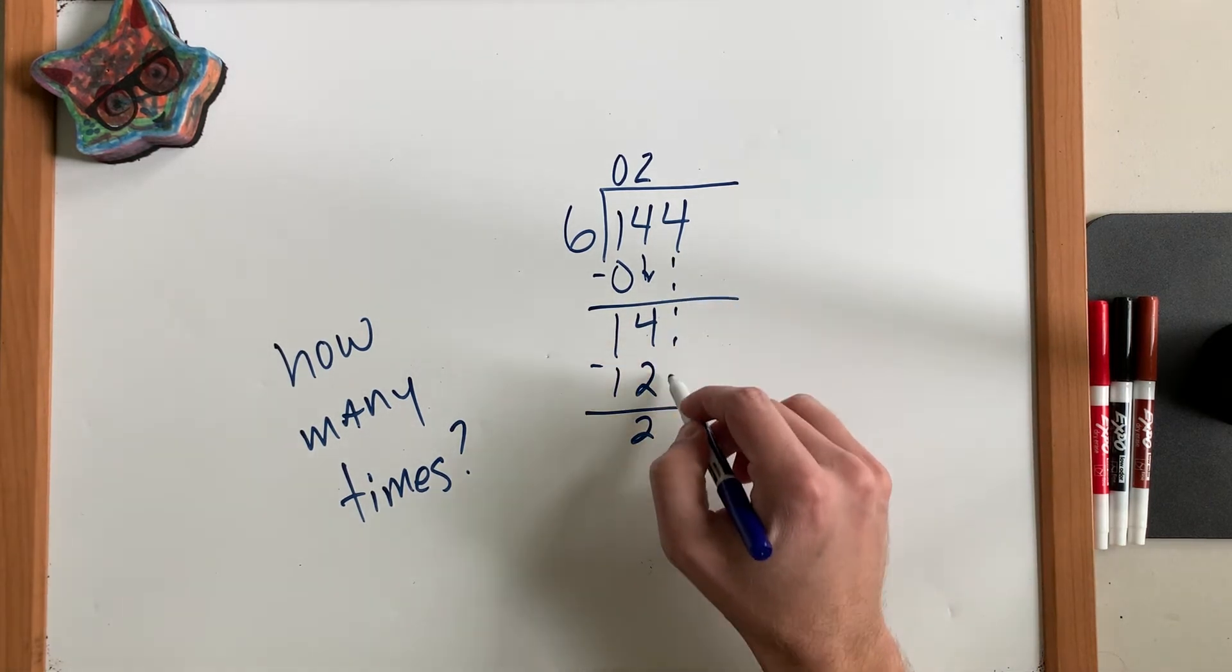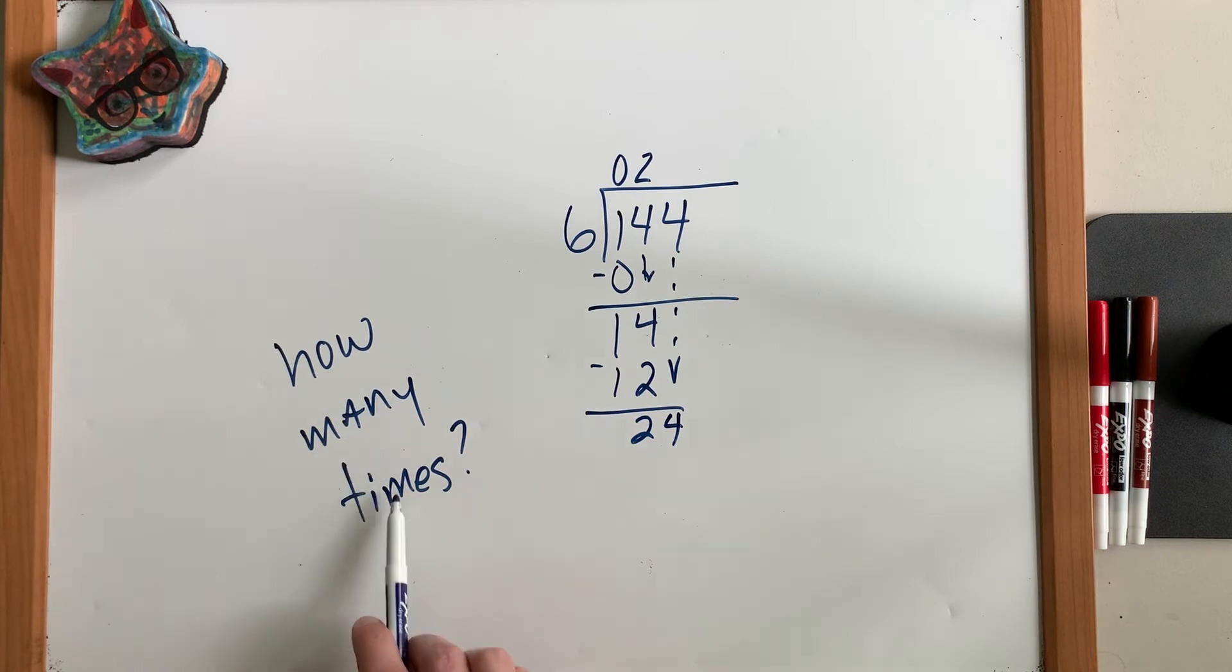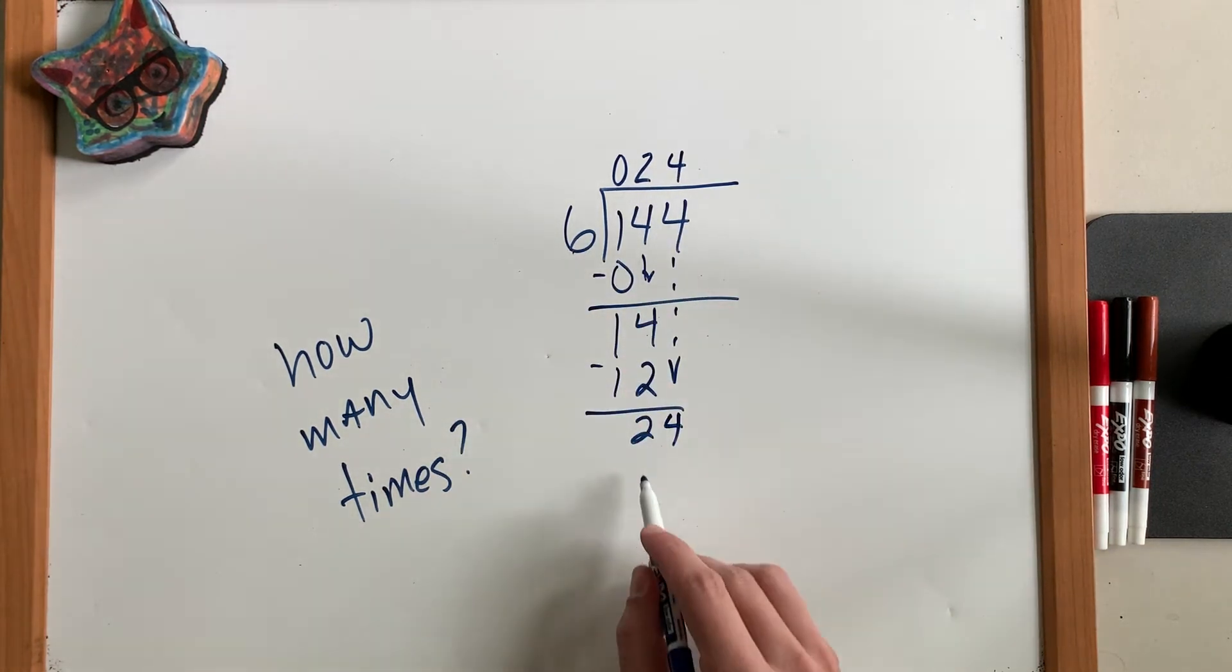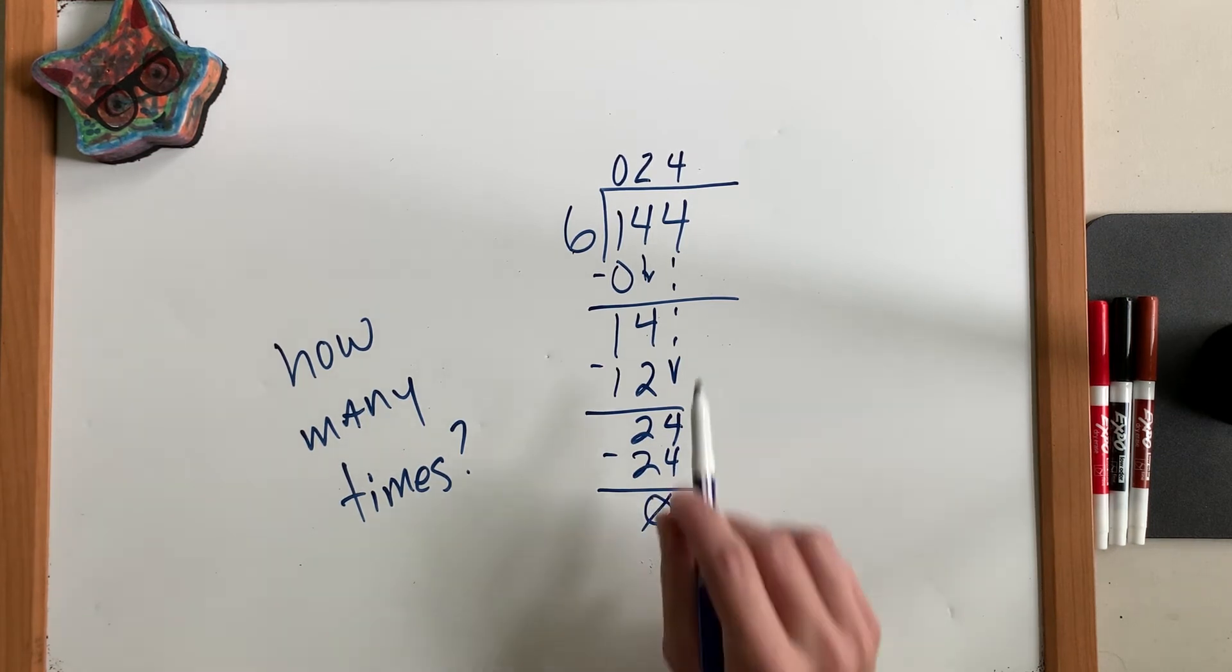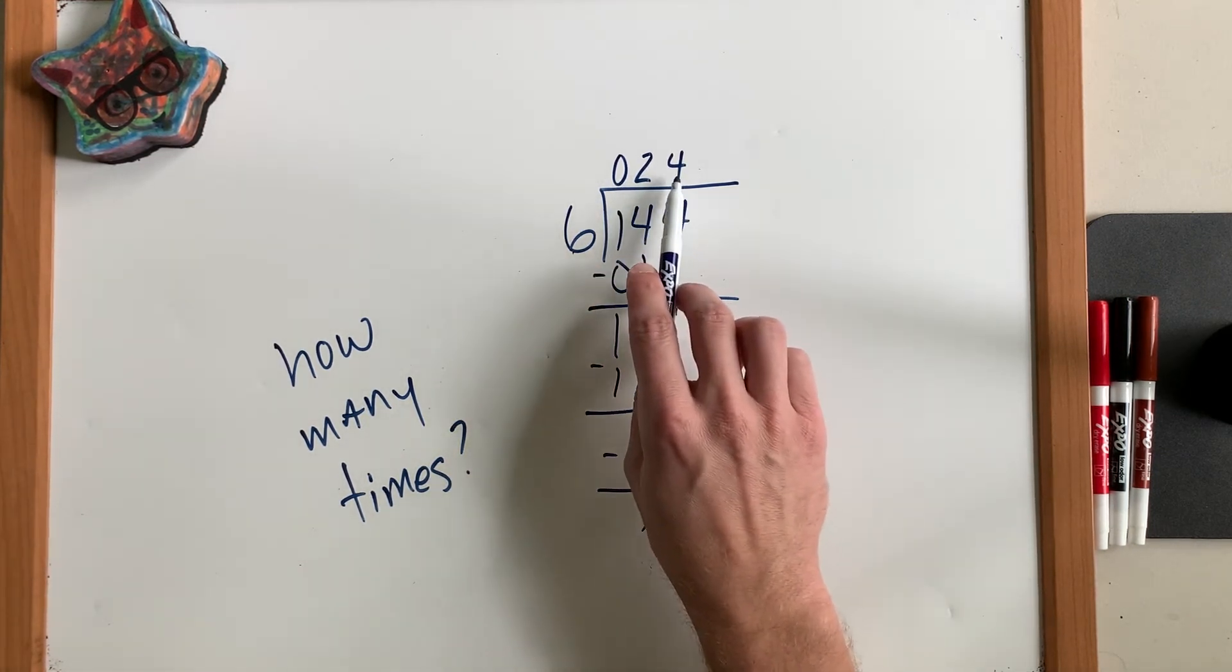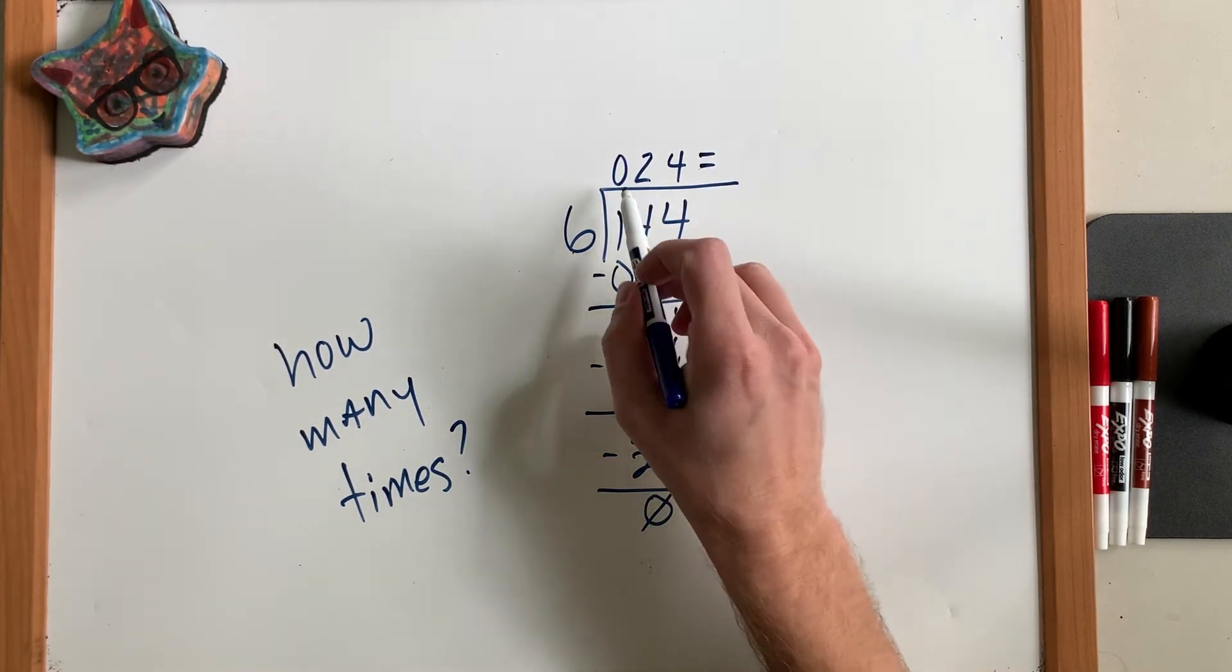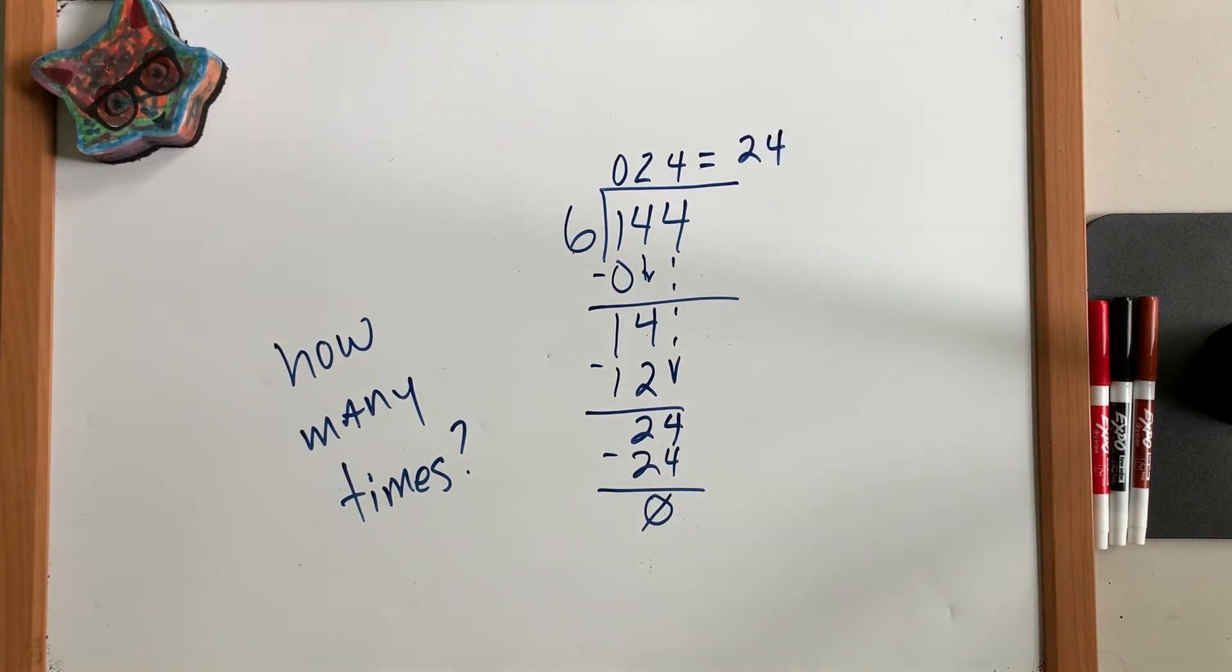Now we're going to bring down the last number. And we get, how many times does 6 fit into 24? The answer is 4. 6 times 4 is 24. And when we subtract, we have nothing left over. So our final answer is 24. And by the way, this 0 out front does not change the value of the number. It's a placeholder. So we know that 24 is our final answer.